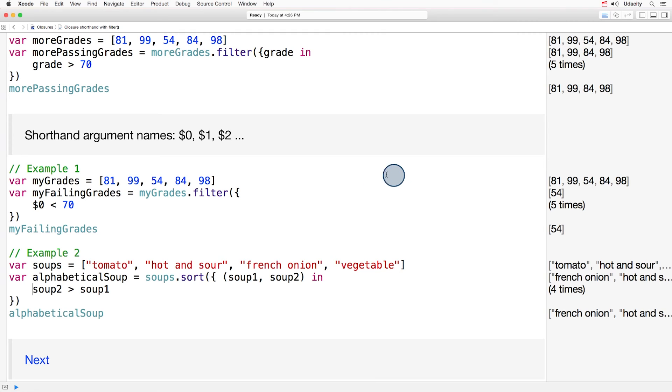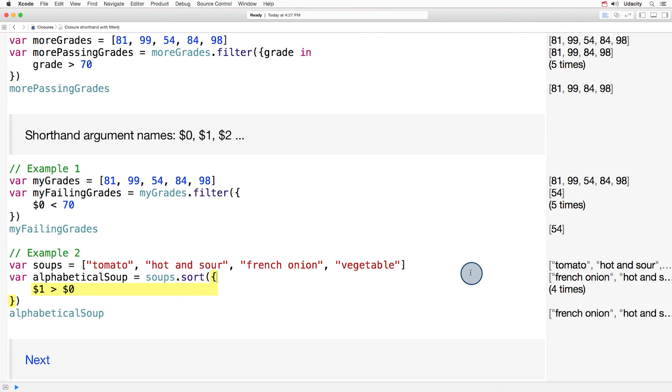And we can use shorthand argument names for soup one and soup two. And we're left with a statement that truly is amazingly concise.